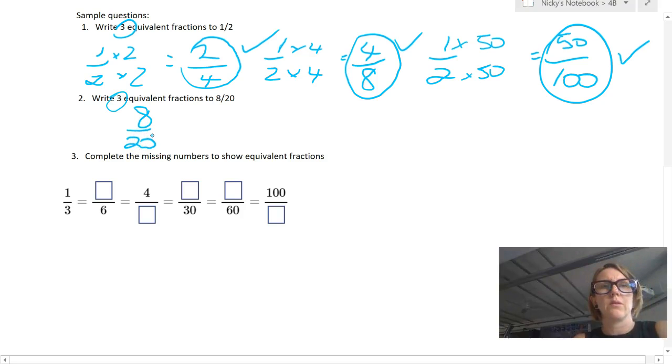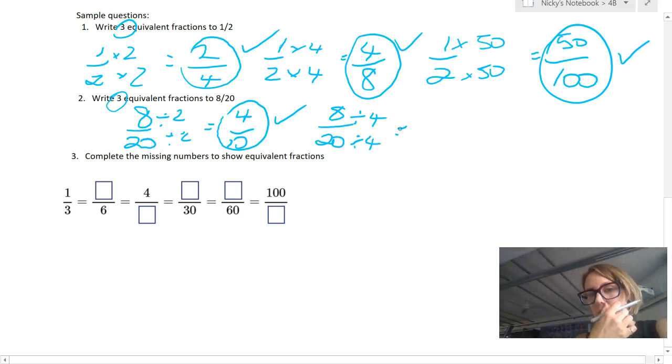So if I had eight over 20, I'd be thinking what number divides into eight and also into 20. So two over 10 is an equivalent fraction to eight over 20. I could divide eight over 20 by four because I know four goes into eight and also into 20. So that would give me two over five. That would be an equivalent fraction.